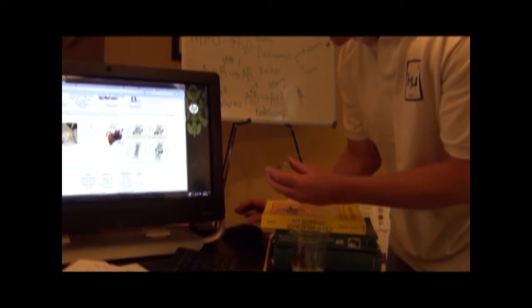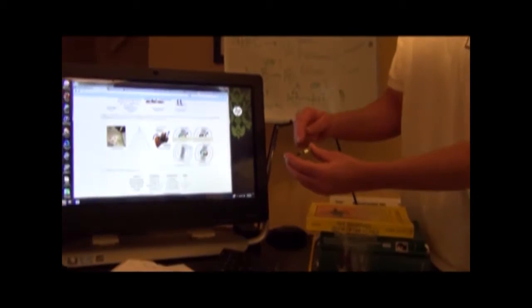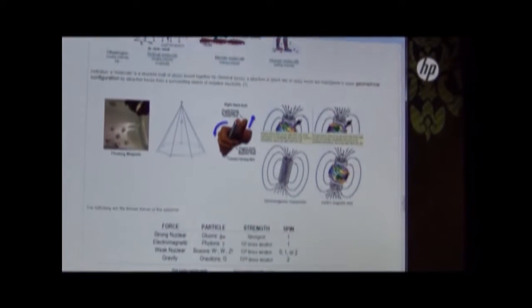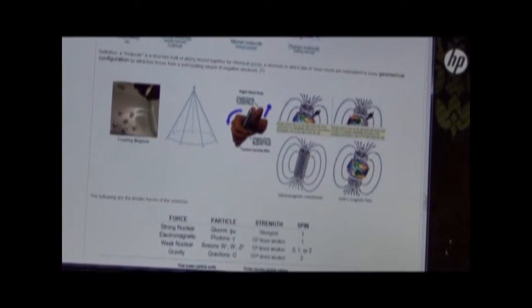If I hold this positive end up right here, see these little lines coming out here? These are magnetic field lines. And they come out of the magnet, out of the top, and they go into the bottom. And we're going to use these field lines to make the magnets float in the water, to make these different geometrical patterns.